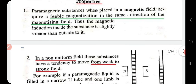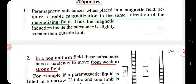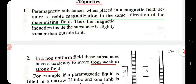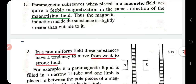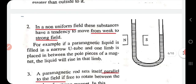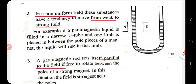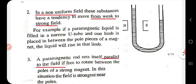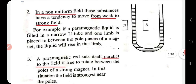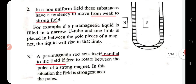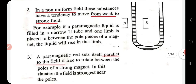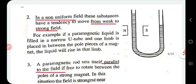The first property is the definition: a paramagnetic substance, when placed in a magnetic field, acquires feeble magnetization in the direction of the magnetizing field. The second property is that in a non-uniform field, a paramagnetic substance has a tendency to move from the weaker region to the stronger field region.